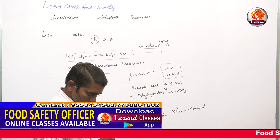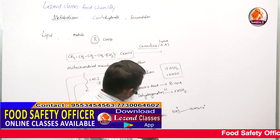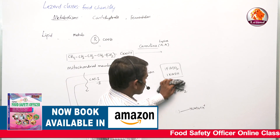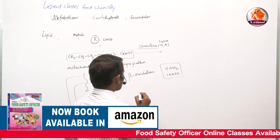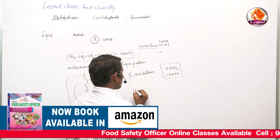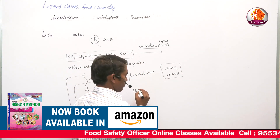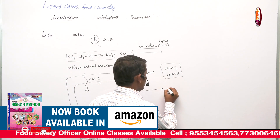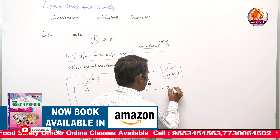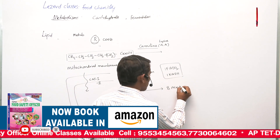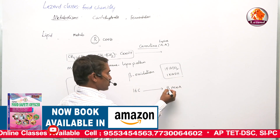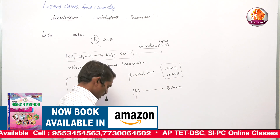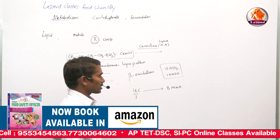The last reaction of each round is called thiolytic cleavage. For example, a 16-carbon containing fatty acid upon beta-oxidation can generate eight acetyl-CoA molecules, because acetyl-CoA contains two carbons. So a 16-carbon fatty acid generates eight acetyl-CoA molecules.